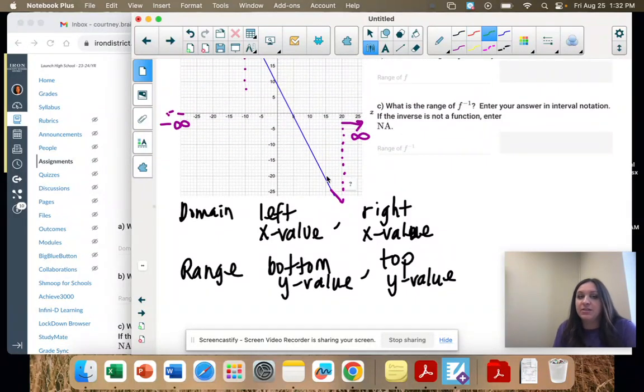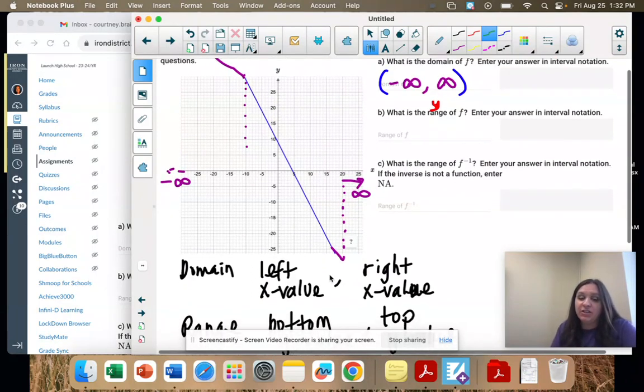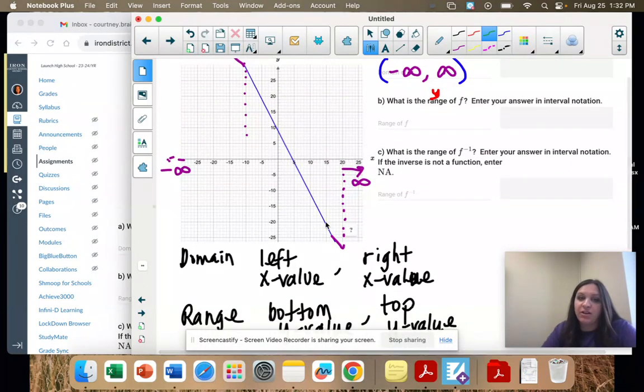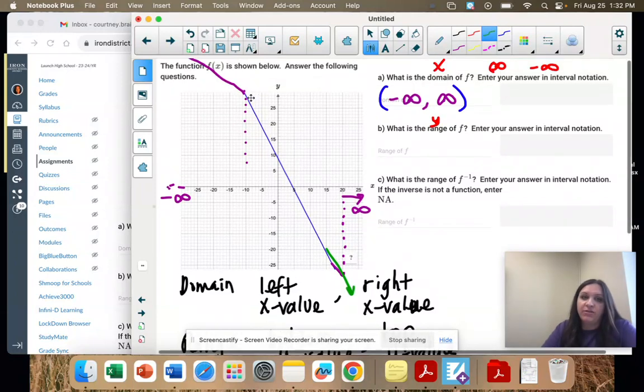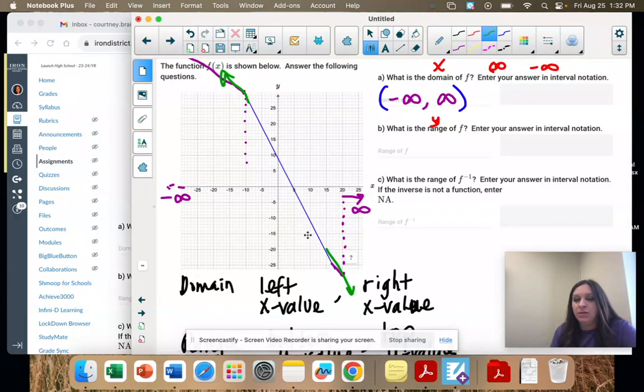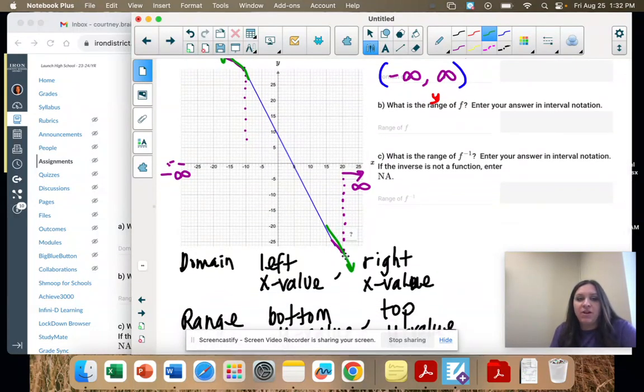So this is a linear equation. Whenever you have a linear straight line, it goes forever up, right, and forever down. So if I were to follow this over to the y-axis, we're in the negative numbers, but it keeps going forever.